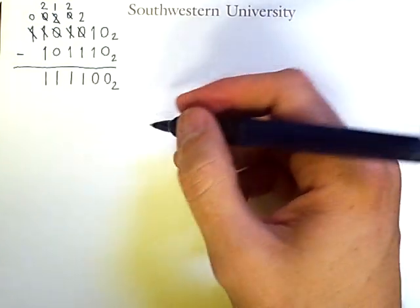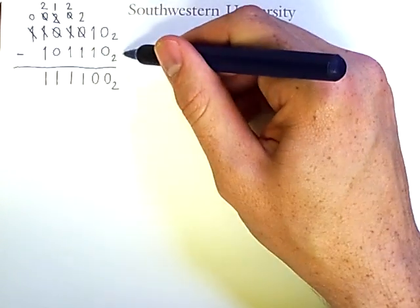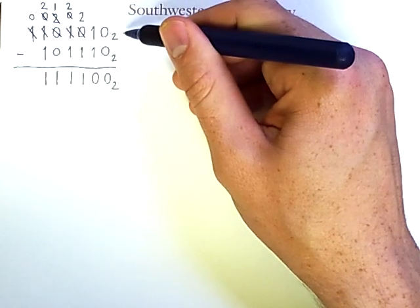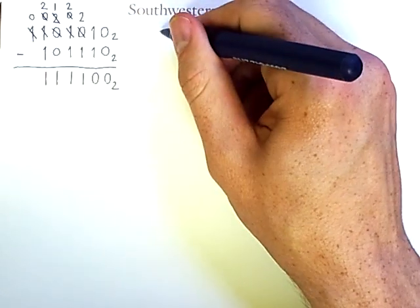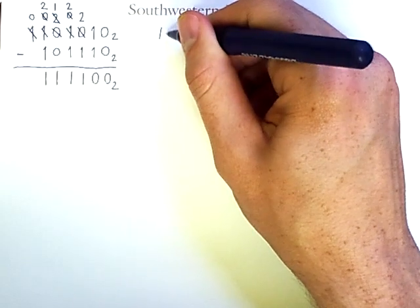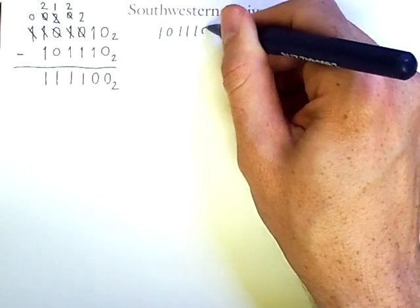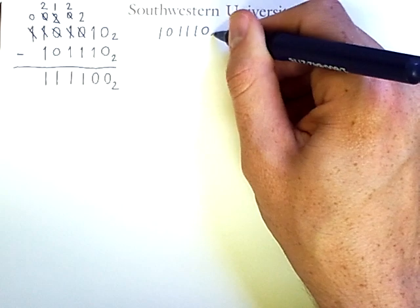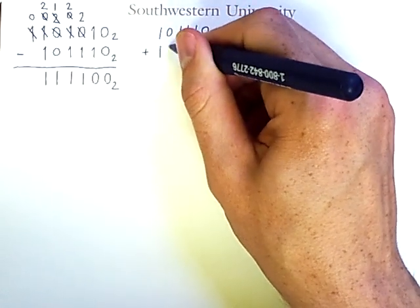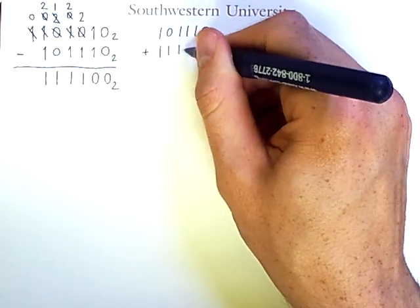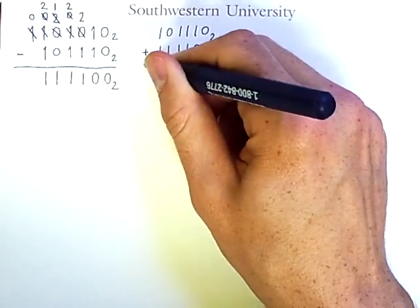Now we can confirm the correctness of this calculation by adding these two numbers and making sure that we get our original result back. We take 1, 0, 1, 1, 1, 0 in binary plus 1, 1, 1, 1, 1, 1, 0, 0 in binary.